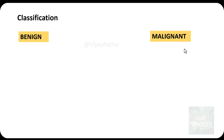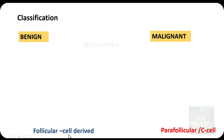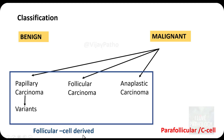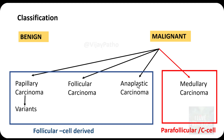Coming to the classification of thyroid tumors — broadly they are benign and malignant. Focusing on malignant tumors, the classification is simple: follicular cell-derived or parafollicular/C cell-derived. Follicular cell-derived tumors include papillary carcinoma and its variants, follicular carcinoma, and anaplastic carcinoma. The C cell-derived malignant tumor is medullary thyroid carcinoma, also called medullary carcinoma of thyroid.